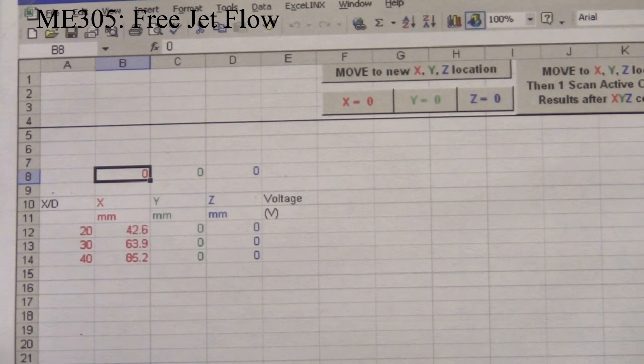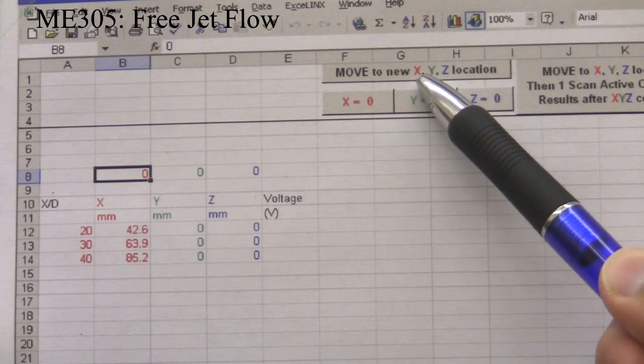For example, let's move 20 diameters downstream of the jet. Note that column A has the values of x over D. Column B has the actual x-coordinate values. Highlight cell B12 and click on Move to New XYZ Location.